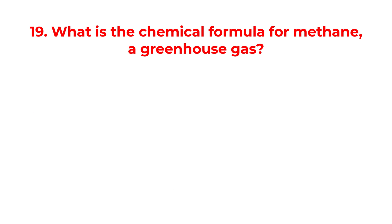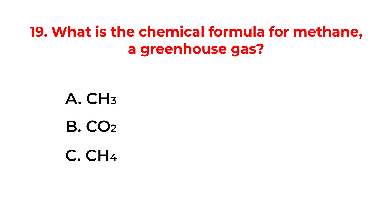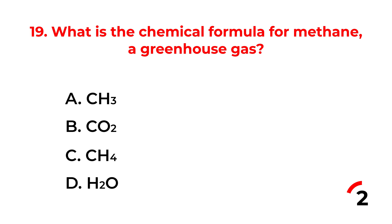What is the chemical formula for methane, a greenhouse gas? A. CH3. B. CO2. C. CH4. D. H2O. The correct answer is option C: CH4.